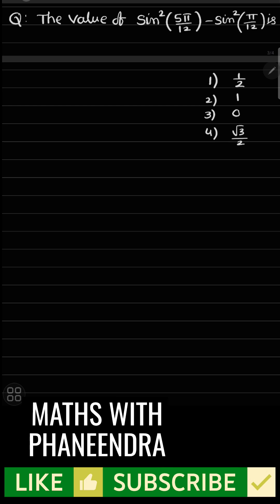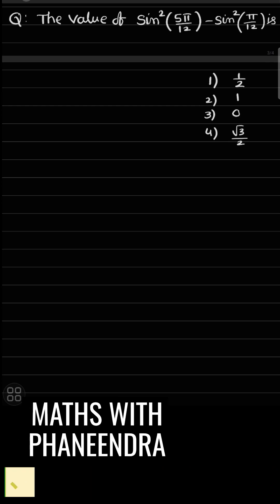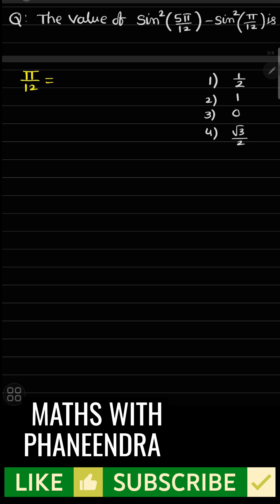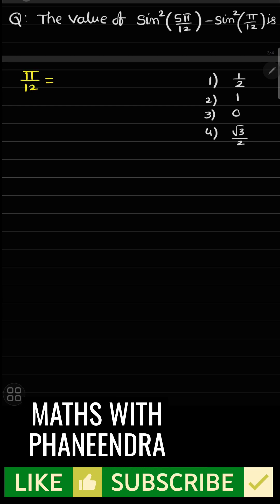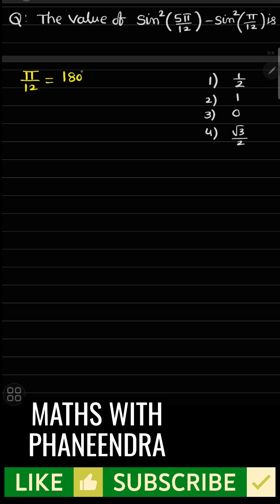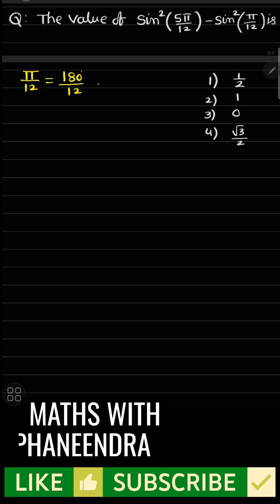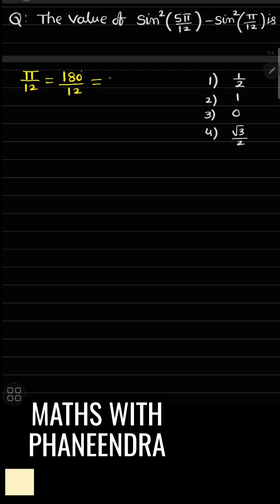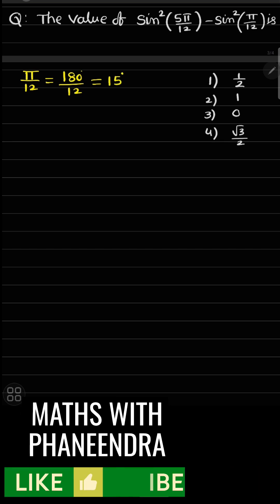Here first, what is the value of π/12 in terms of degrees? Some students may not know about degrees. So π/12 means 15 degrees.